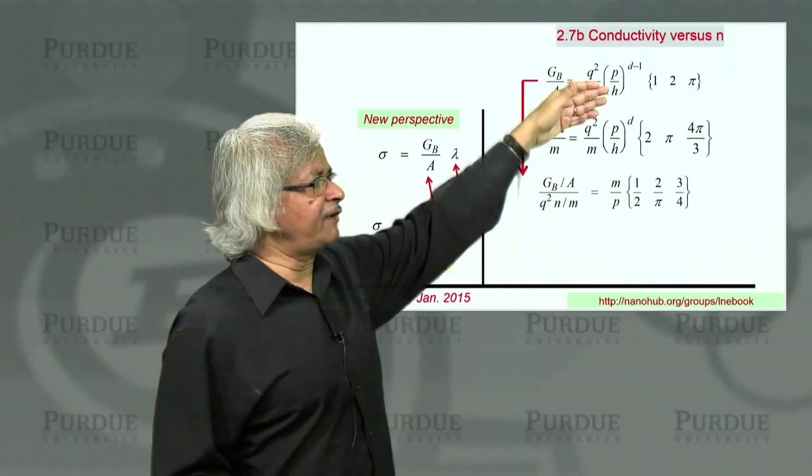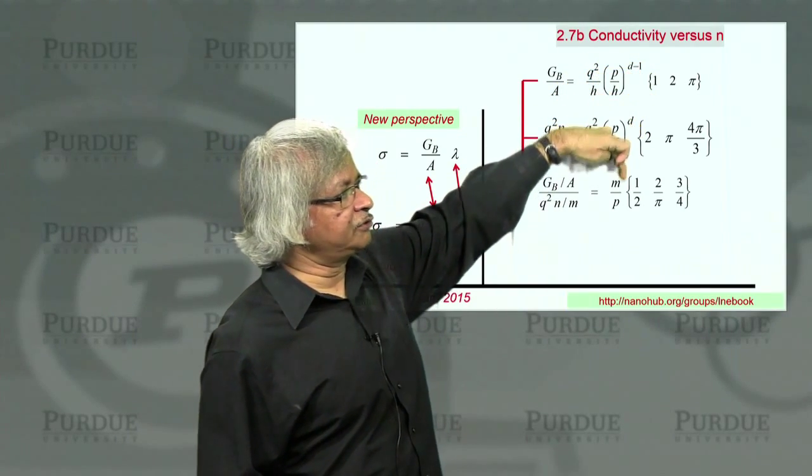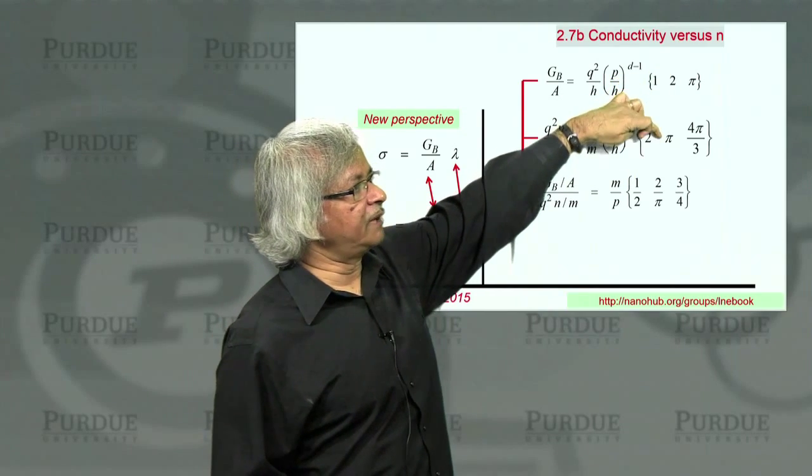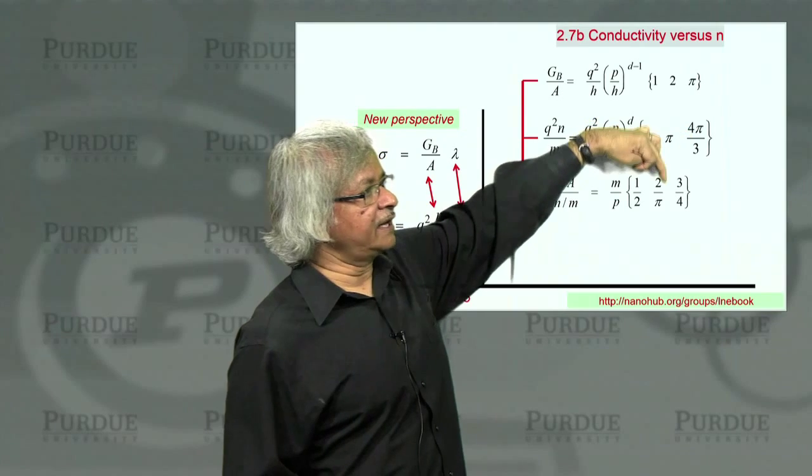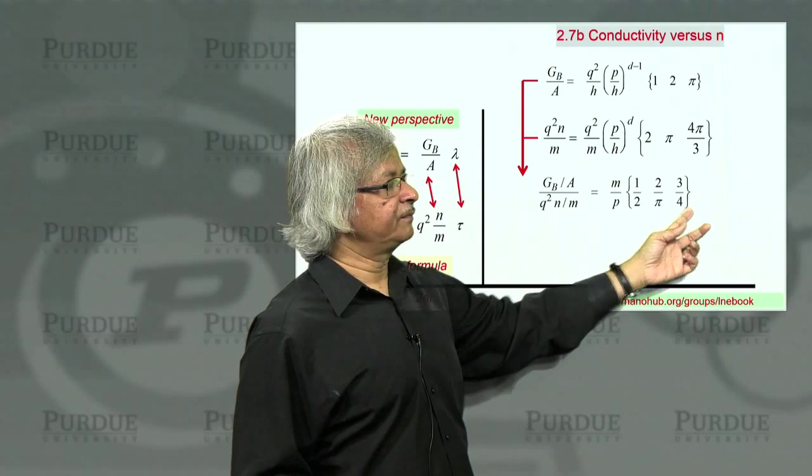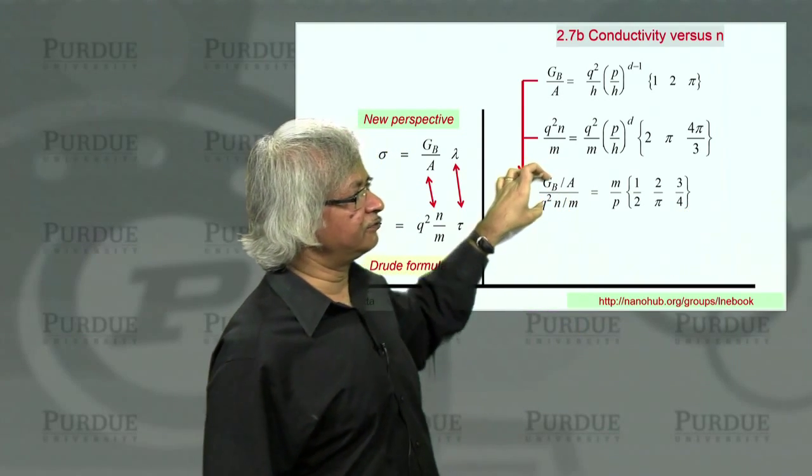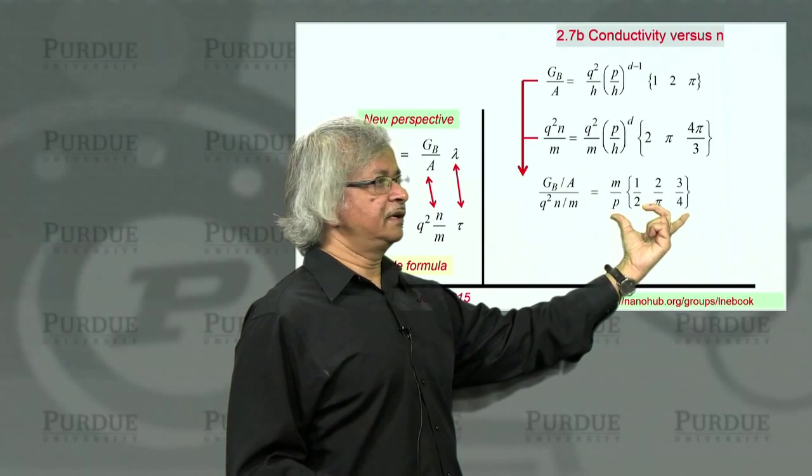And as far as the dimensional factors are concerned, I guess it's straightforward. 1 divided by 2, that's half. 2 divided by pi in two dimensions, that's 2 over pi. Pi divided by that, that's 3 fourths. So in 1D, 2D, and 3D. But in every case, then the ratio of this quantity to that quantity is this m over p times that.